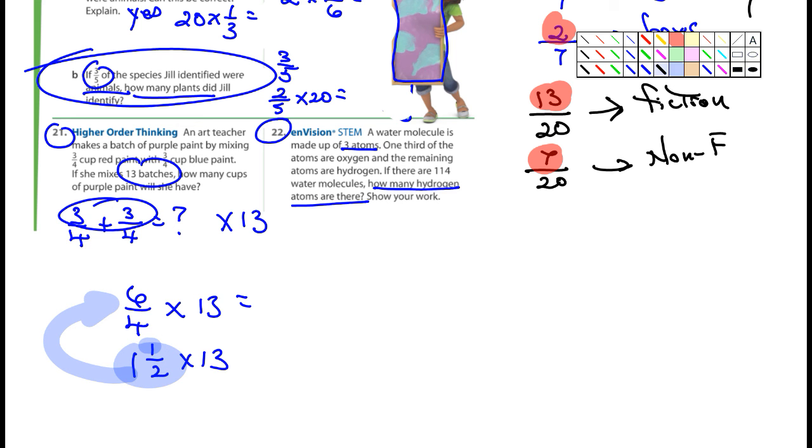All right, number 22, the last one. It says a water molecule is made up of 3 atoms. It says 1/3 of the atoms are oxygen. And so we're talking about one water molecule. That means one of the atoms is oxygen, and the remaining are hydrogen. So 2/3 of the atoms are hydrogen. And it says if there's 114 water molecules, how many hydrogen atoms are there? 2/3 times what? There you go. So that's it. And so you don't have to worry about 23, 24. I'm not worried about those. So you guys should know what I want you to do.